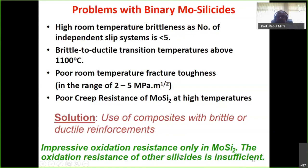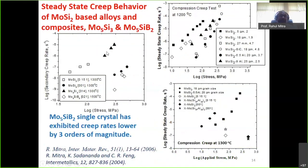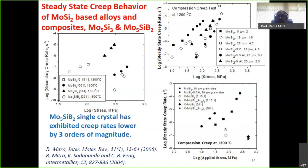This view graph shows creep properties of different intermetallics tested in air and vacuum. MoSi2 tested in different orientations shows different properties — the [001] orientation is a hard orientation with better creep resistance compared to [015] orientation. Mo5SiB2 shows very high creep resistance: tested at 1500°C it still shows a lower creep rate than MoSi2 at 1300°C. With addition of aluminum or SiC, creep resistance of MoSi2-based materials improves, and single crystals obviously show better creep resistance than polycrystalline MoSi2.